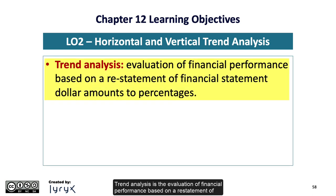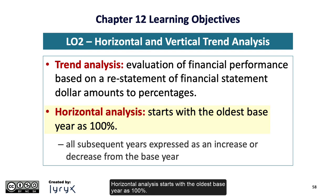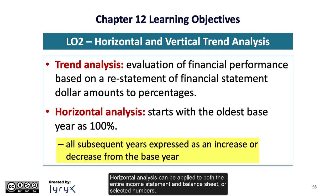Trend analysis is the evaluation of financial performance based on a restatement of financial statement dollar amounts to percentages. Horizontal analysis starts with the oldest base year as 100%, and all subsequent years are expressed as an increase or decrease from the base year. Horizontal analysis can be applied to both the entire income statement and balance sheet, or to selected numbers.